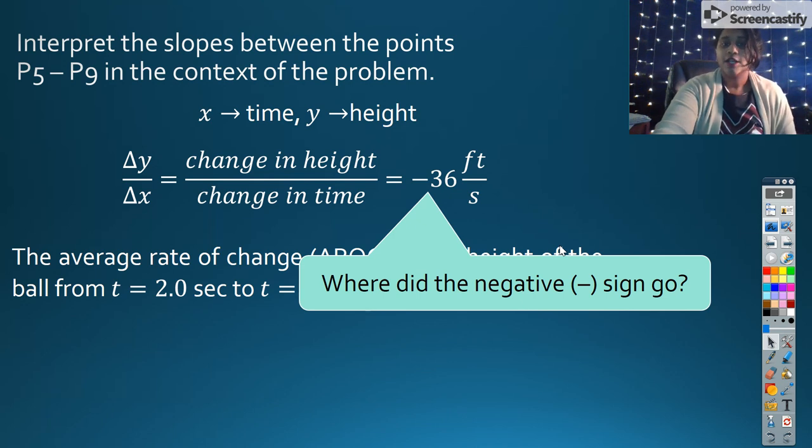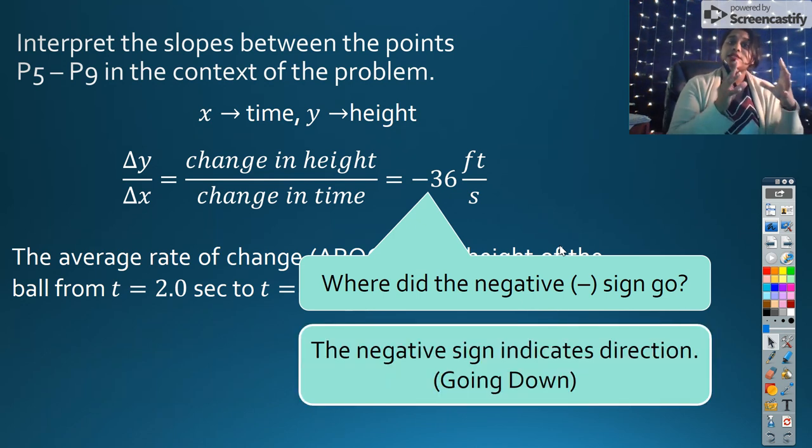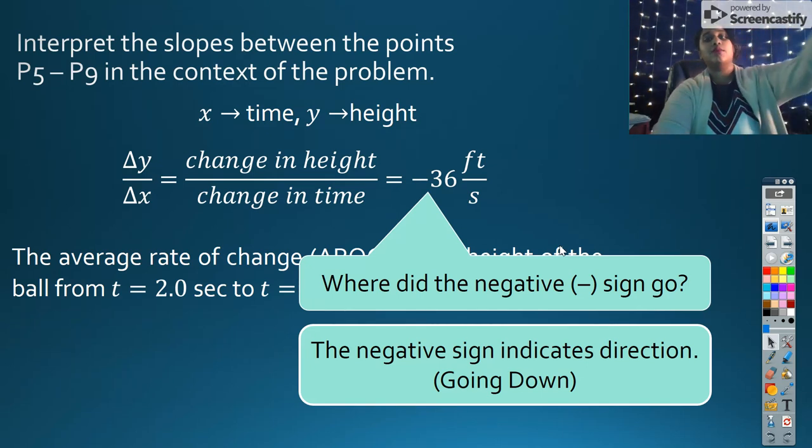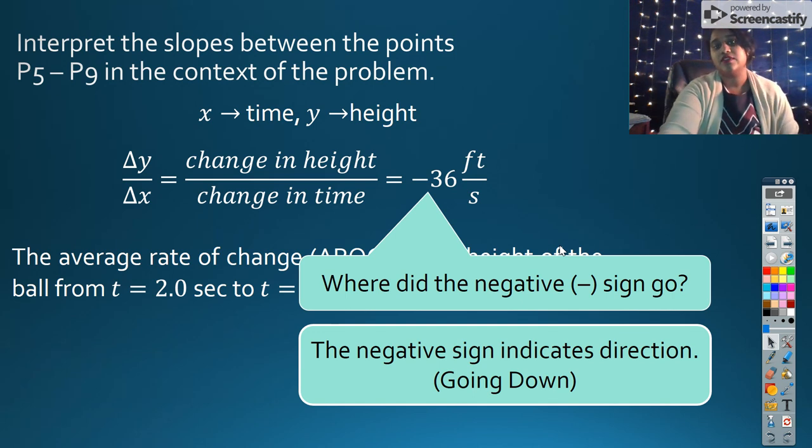...as we begin talking about context, we're going to notice something that sometimes, and most times actually, our negatives and our positives, those sign indications indicate direction, especially as we start talking about derivatives and our second derivatives. So this is telling me I am going down. That's what that negative sign tells me.